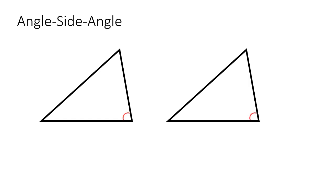With angle-side-angle, we've got two consecutive angles that are congruent, and the side connecting those two angles is also congruent. Notice that the side is in between the two angles — that's why we call this angle-side-angle.